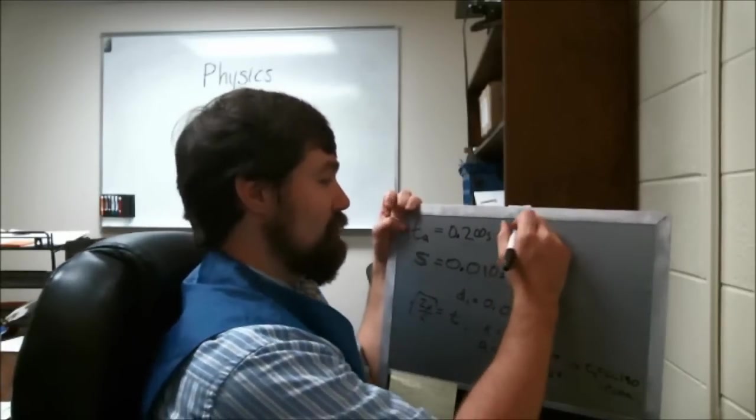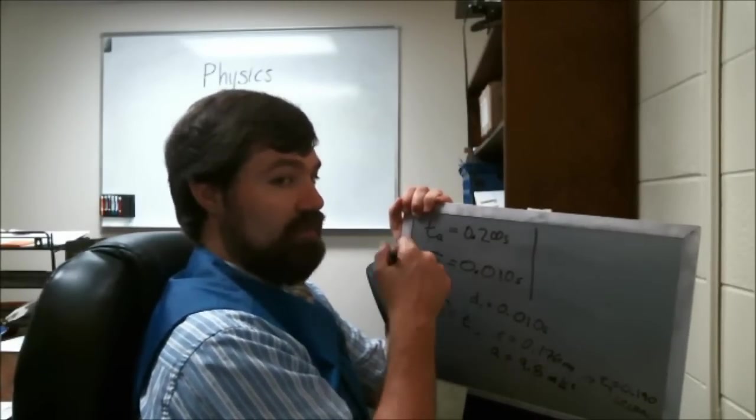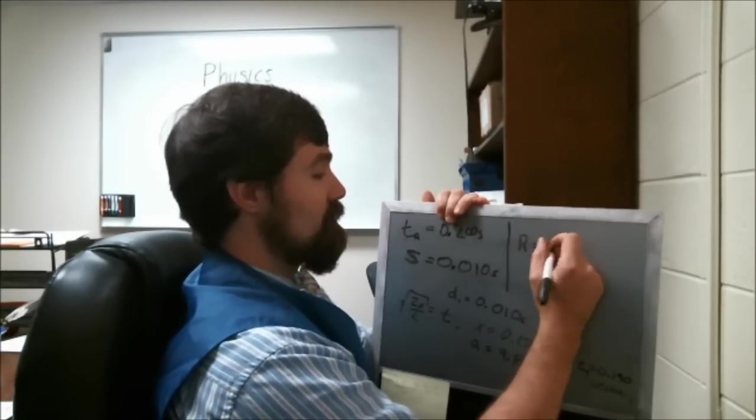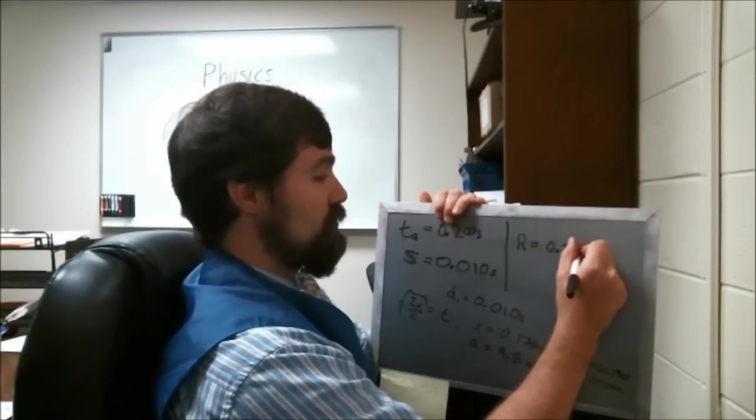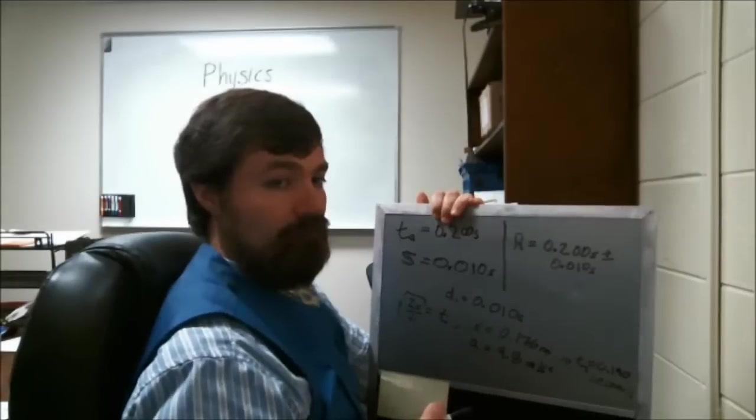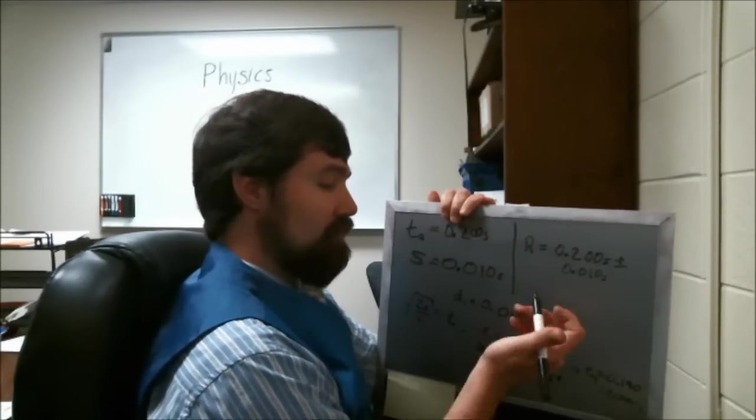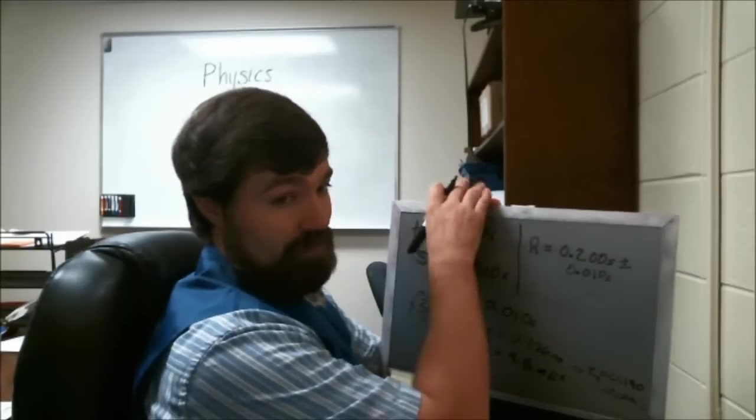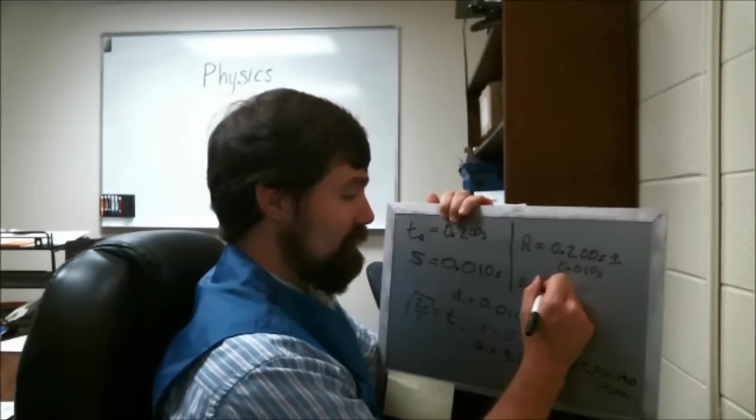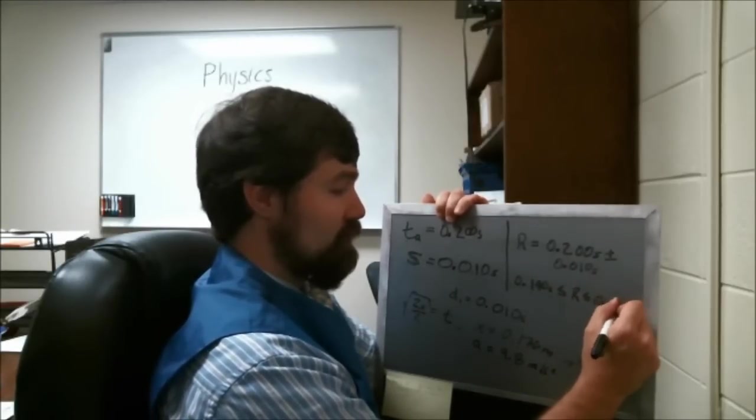So once you get that, your standard deviation, let's say that you get s is equal to 0.01 seconds for the sake of argument. You can then create a result, and the result is going to be average minus standard deviation up to average plus standard deviation. So your result is going to be 0.200 seconds plus or minus 0.010 seconds. And that's equivalent to saying that your reaction time for this hand falls somewhere within your limits of uncertainty, somewhere in the range of 0.19 seconds up to 0.21 seconds.